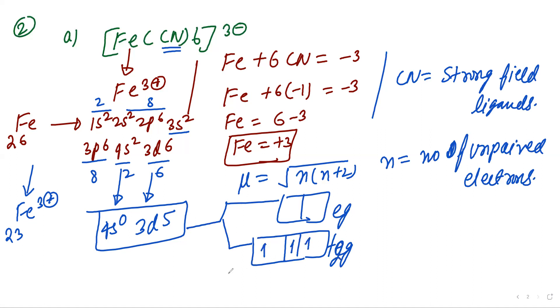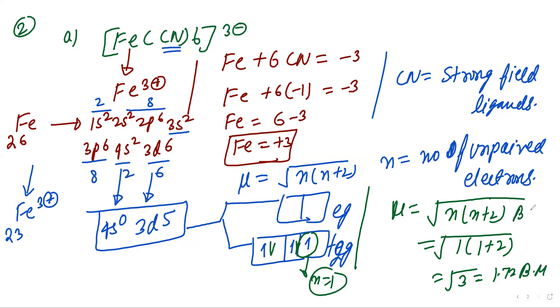So first give one electron each, then pair it. Total unpaired electrons is 1. So mu equals under root n into n plus 2. n equals 1, so this is 1 into 1 plus 2. Under root 3, that is 1.72 Bohr magnetone. When strong field ligand, first fill the lower orbital. This is the explanation for Fe(CN)6 3 minus.